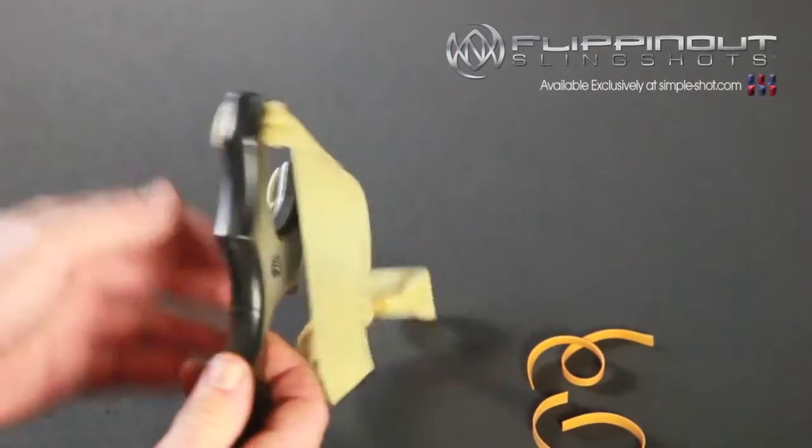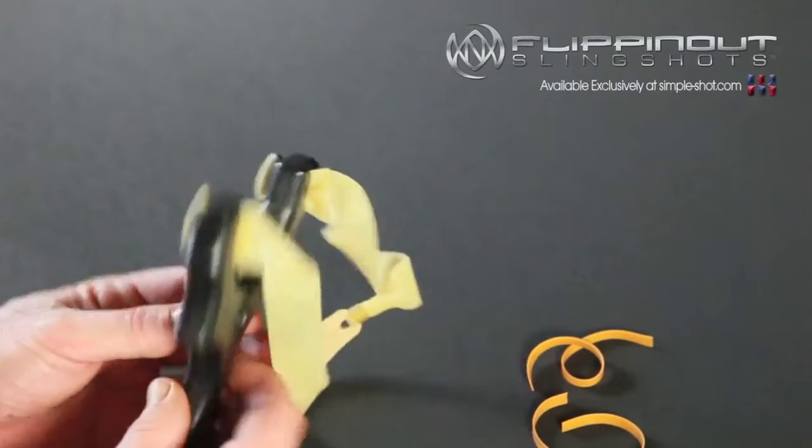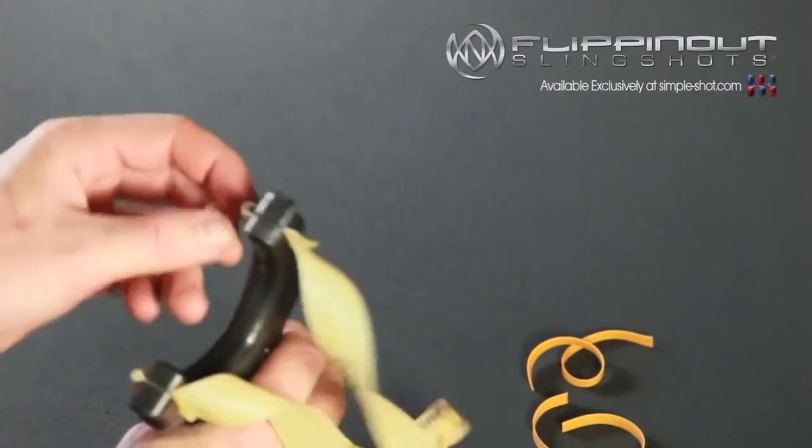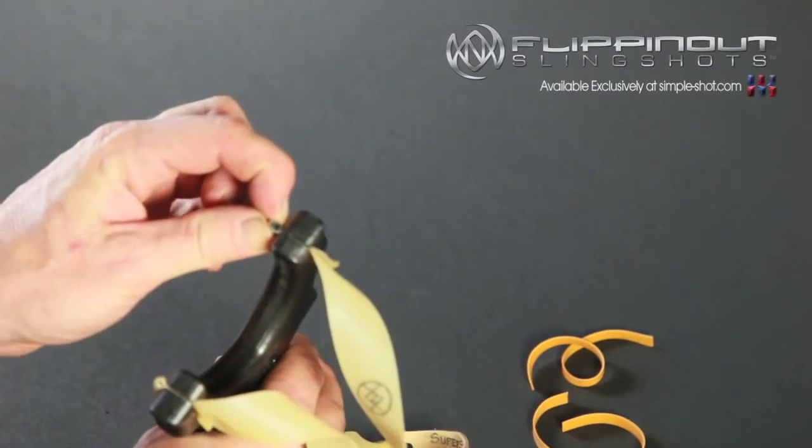The banding method on the Peerless is what they call the matchstick method. It's a very classic method of attaching flat bands through a single slot. Instead of using matchsticks, we're simply using small bits of rubber tube.